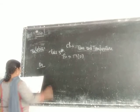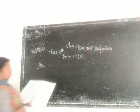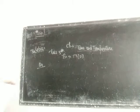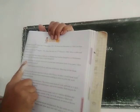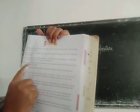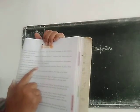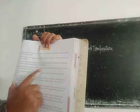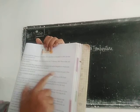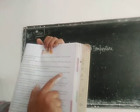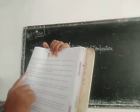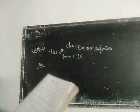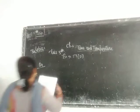Question number 4 is saying: Sunita lives home for school at 10 to 7 and comes back at 10 past 2.